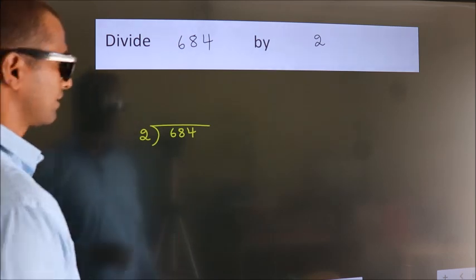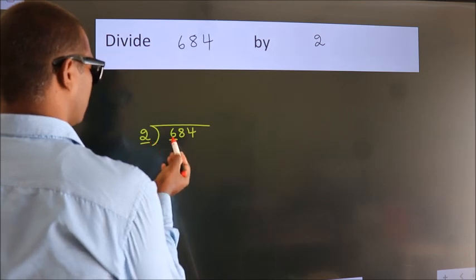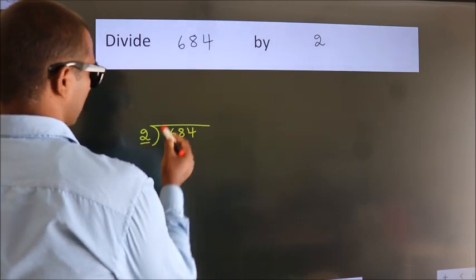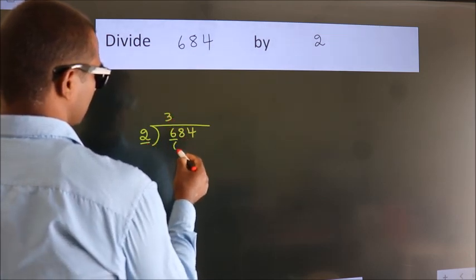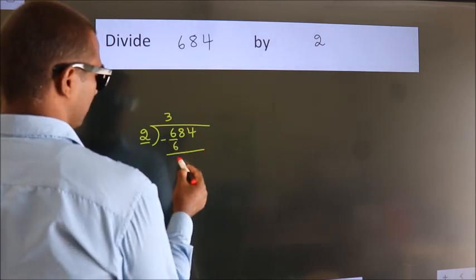Next, here we have 6. Here 2. When do we get 6? In 2 table. 2 threes, 6. Now we should subtract. We get 0.